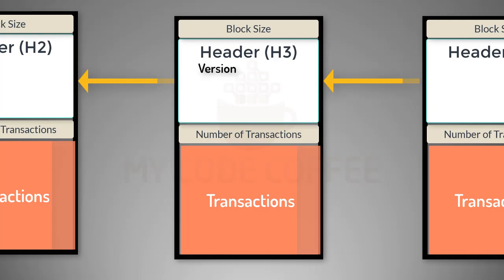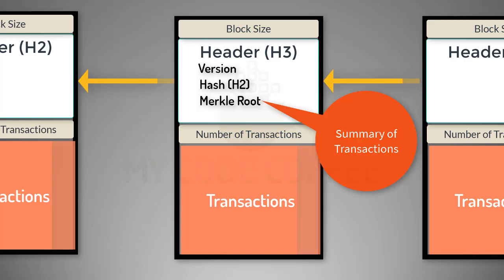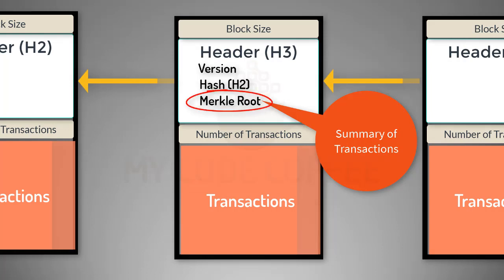Number one, it has the version information to track software or protocol upgrades. Number two, it has the hash of the header of the previous block, which connects this block to the previous block. Number three, it has something called Merkle Root. The next chapter is dedicated to the concept of Merkle Root and Merkle Tree, but for now you can think of Merkle Root as the summary of all the transactions of this block, which means if there is any change in any transaction, the Merkle Root will also change.